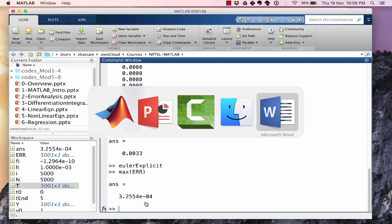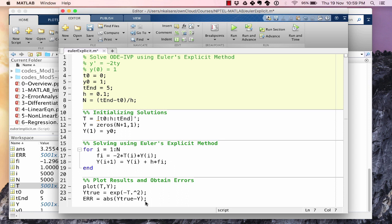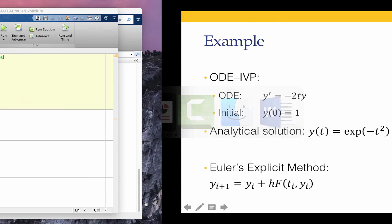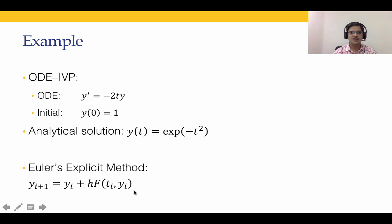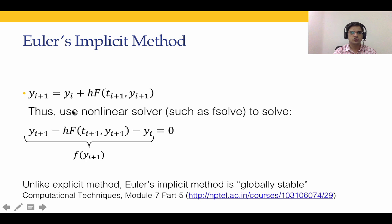Let's change h back to its original value and return to the slides. In Euler's explicit method, f was calculated at t(i), y(i). We could instead calculate f at t(i+1), y(i+1), which gives what is known as Euler's implicit method. In the explicit method, t(i) and y(i) are already known so we can directly compute y(i+1).